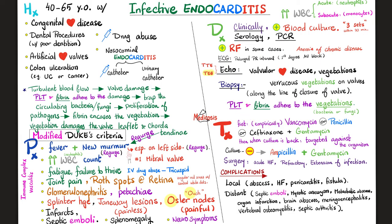How can I treat infective endocarditis? Empirically, before culture results come back, give vancomycin, penicillin, or ceftriaxone plus gentamicin, depending on circumstances. Once the culture comes back, treat the specific organism — if it's Candida, treat Candida; if it's viridans, treat viridans. If it's culture-negative infective endocarditis, give ampicillin and gentamicin together — a very important combination, though gentamicin can destroy kidneys and ears: it's nephrotoxic and ototoxic, as one of the aminoglycosides.